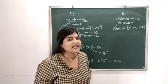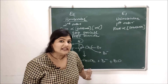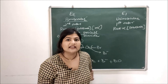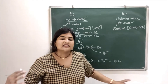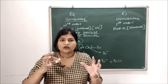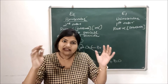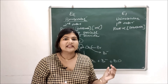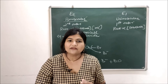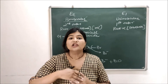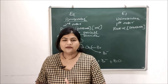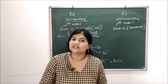Now let's discuss how the E1 mechanism proceeds. As I mentioned, primary and secondary alkyl halides prefer E2 mechanism. But for tertiary alkyl halides there is a lot of steric hindrance — there are multiple alkyl groups attached to the carbons. So the nucleophile cannot directly go and attack the carbons. It will proceed by two steps: in the first step a carbocation will be formed, and in the second step the elimination will occur.